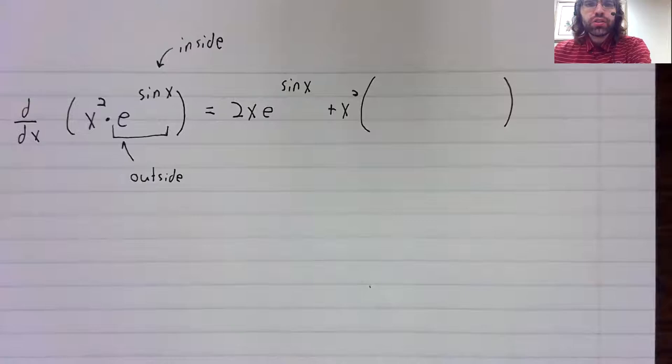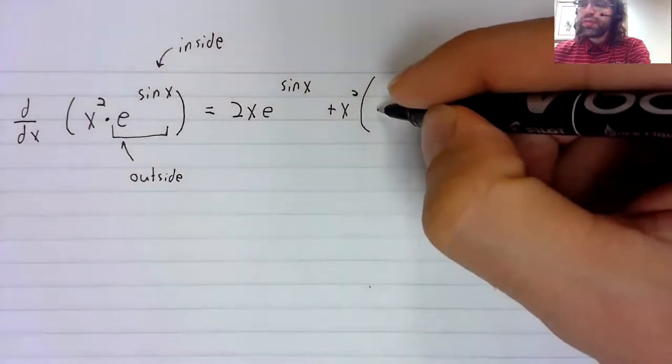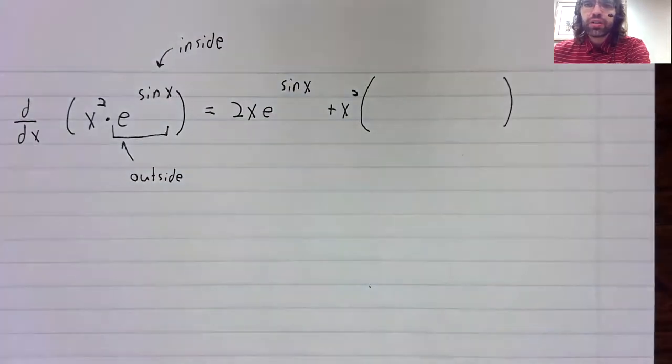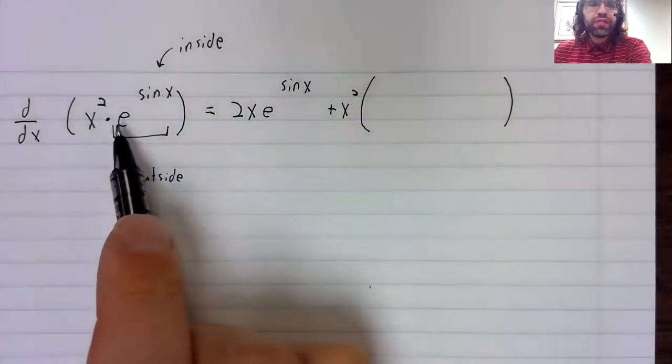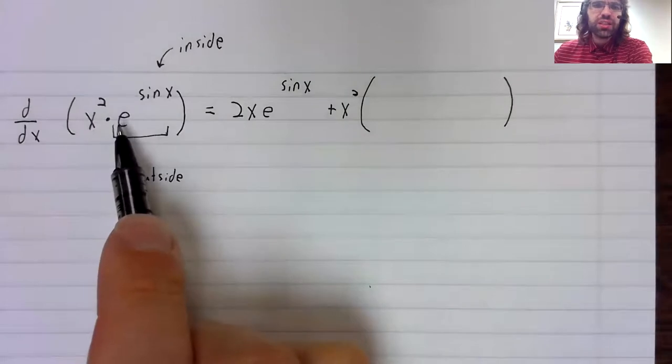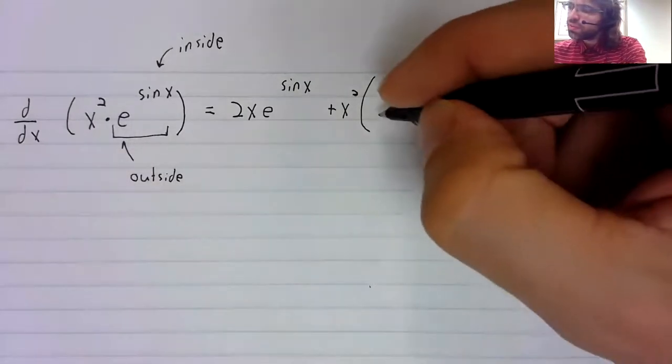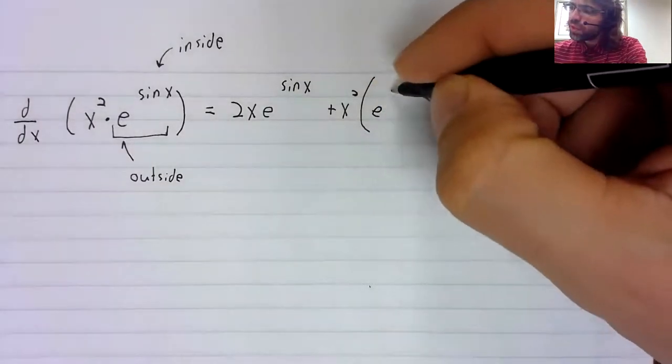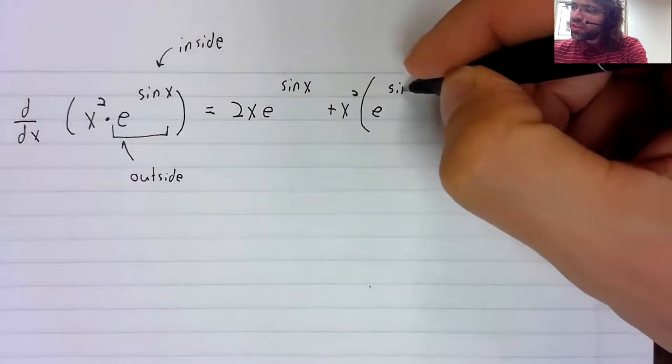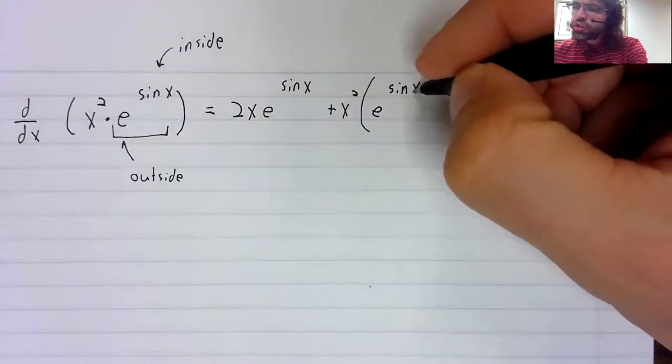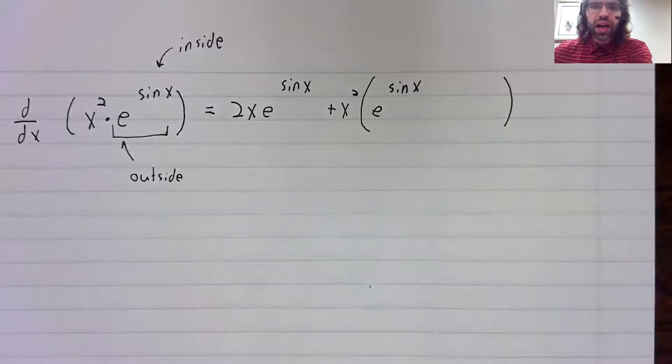So what do we do? We take the derivative of the outside function. Now the derivative of e to the x is e to the x. And we stick the inside function inside of the outside function.